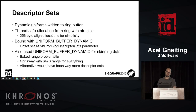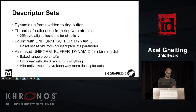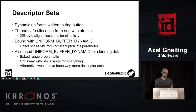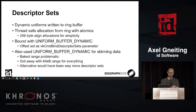For dynamic uniforms, we use a ring buffer like we do on the consoles, with thread-safe allocation using atomics. You need to make sure on Vulkan that you 256-byte align everything, because NVIDIA actually requires this — otherwise you get garbage. This is also the maximum the spec allows as an alignment. So if you hardcode it to 256 bytes, you're going to be fine forever.